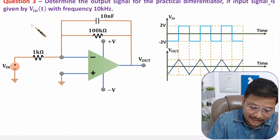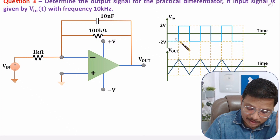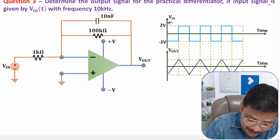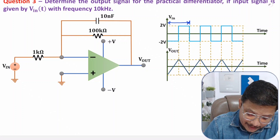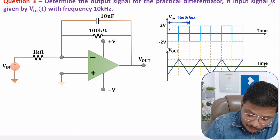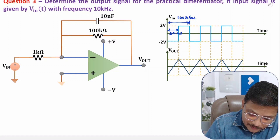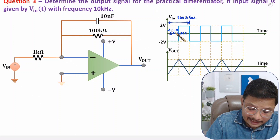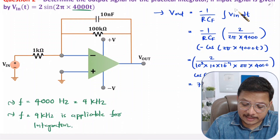Since the input frequency is 10 kilohertz, the time period for one cycle is T = 1/F = 1/10 kHz = 100 microseconds. For half a cycle, the time period is 50 microseconds. I will calculate the output by integrating the input using the same equation from problem 2: V_out = −(1/R·Cf) · ∫V_in dt.